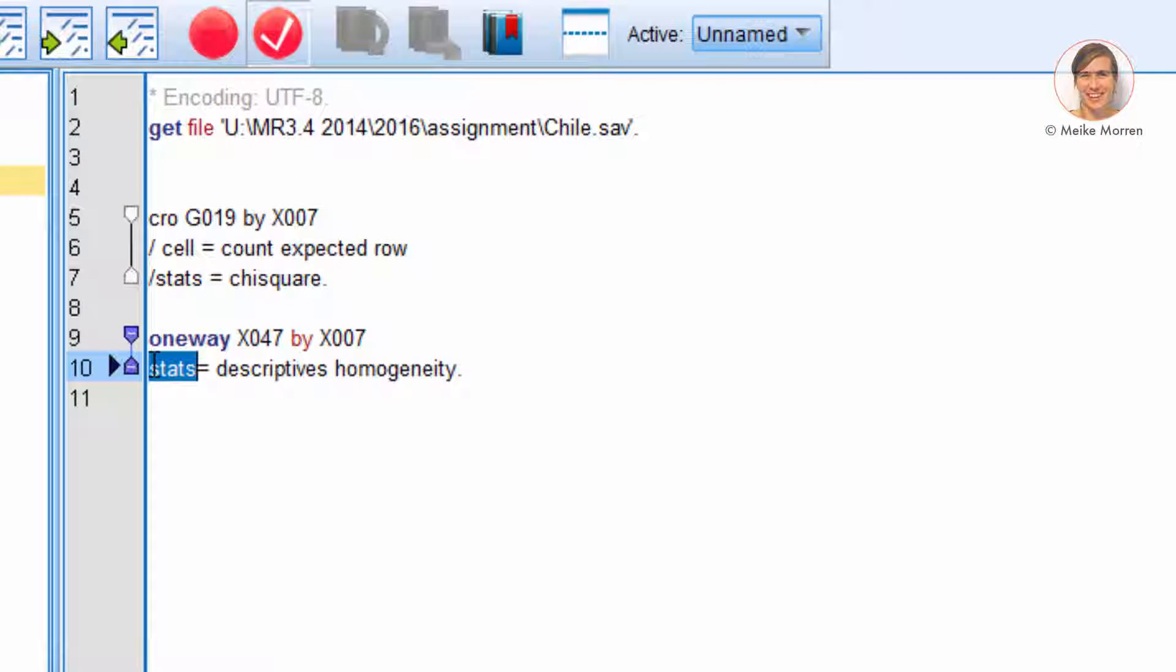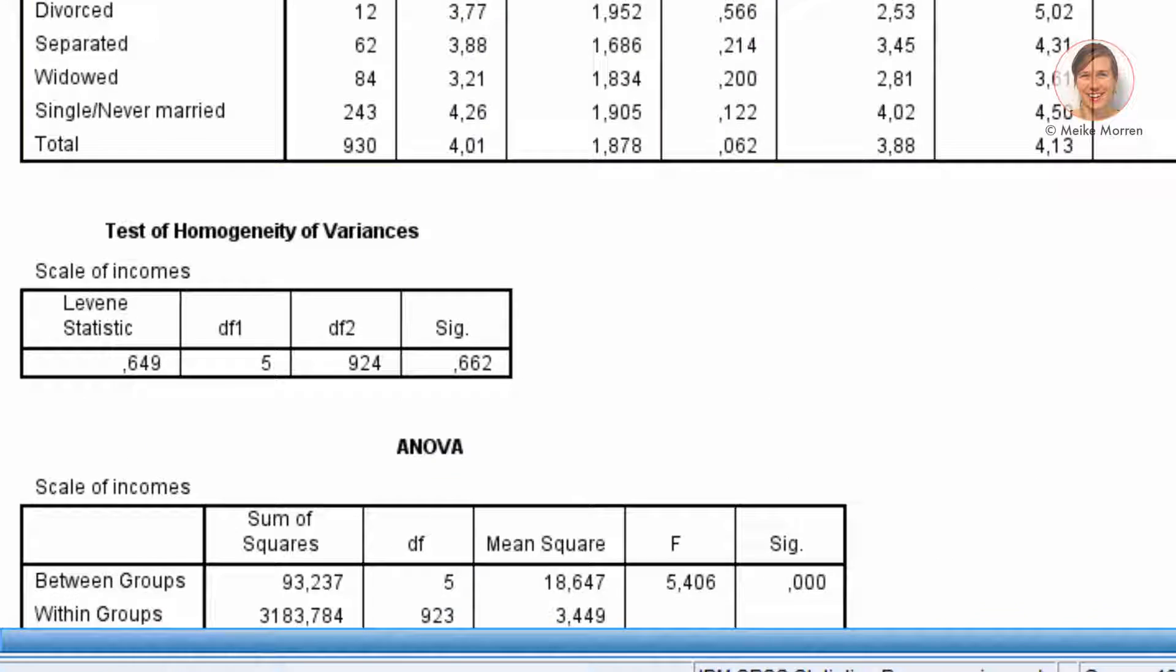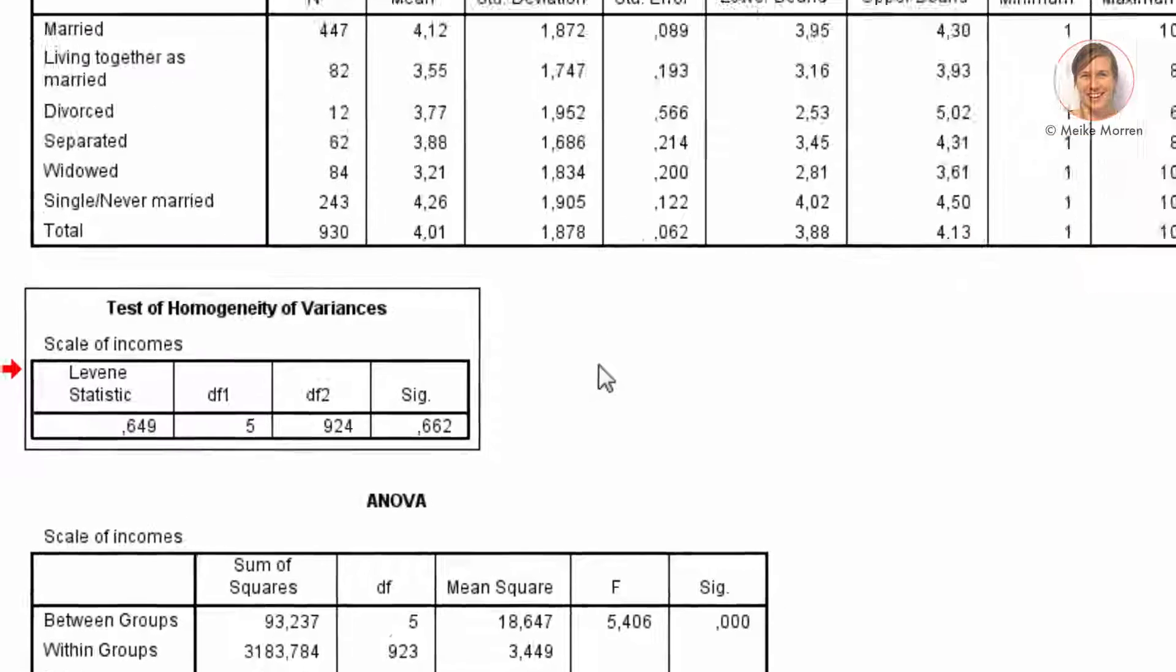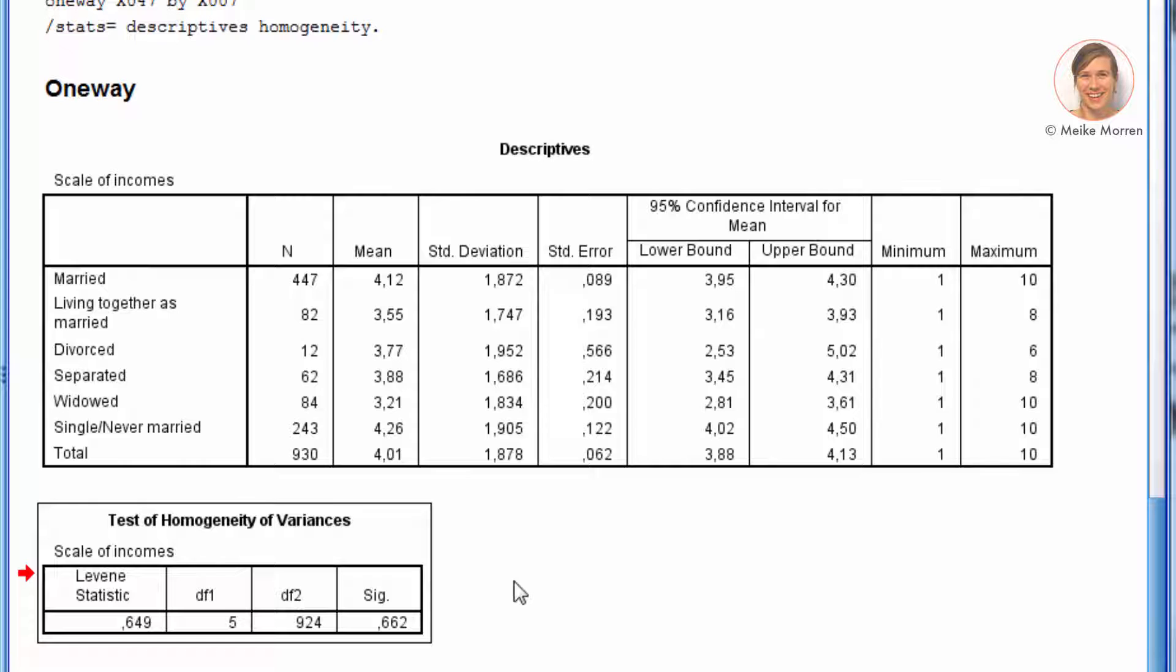You can also test the homogeneity of the variances. So here you have the Levene's test of the homogeneity of variances. Similar to the t-test that we saw before, where we compare two groups, we also assume that the variances are equal in this test. As you can see, it is not significant, meaning that the variances can be considered equal.